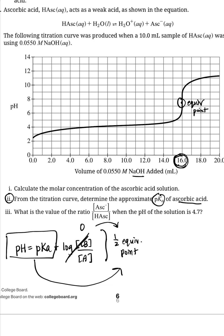So if 16 milliliters is my full equivalence point, that means half of that, in other words, 8 milliliters of base added, this is my half-equivalence point here on the graph.